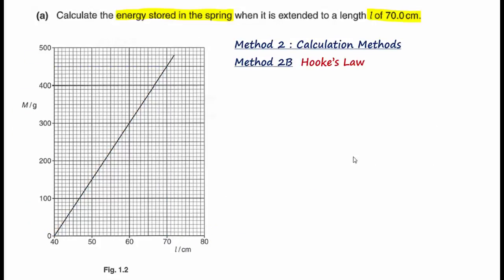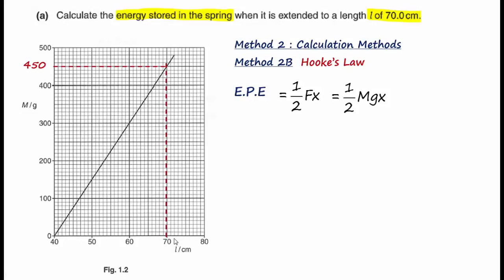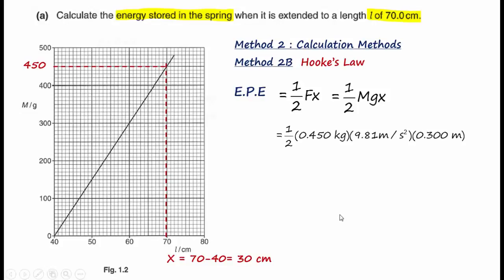Lastly, we use the final method: finding EPE using half Fx. This method only works if the spring obeys Hooke's law, which we have confirmed. Since F equals mg, elastic potential energy equals half mgx. At L equals 70 cm, m is 450 grams and x equals 70 minus 40, which is 30 cm. Substituting and converting to SI units yields elastic potential energy of 0.662 joules.